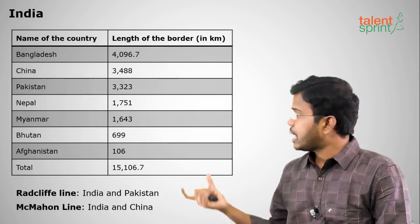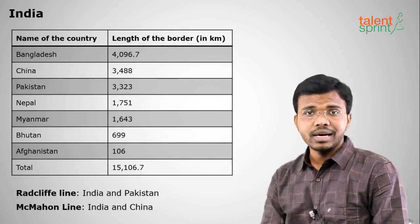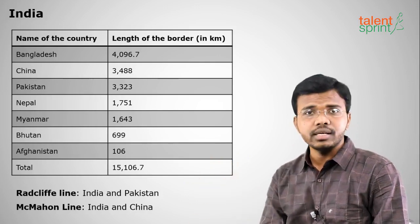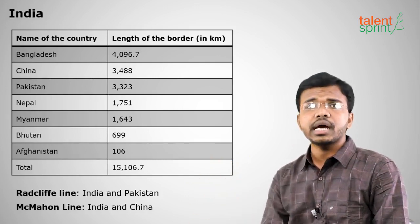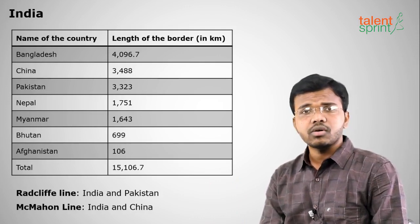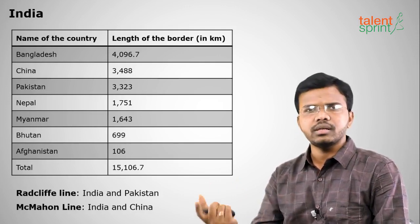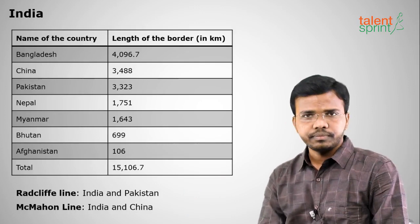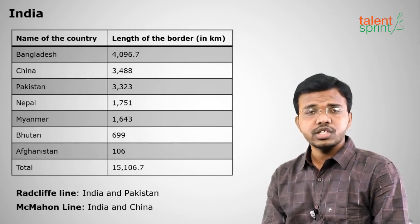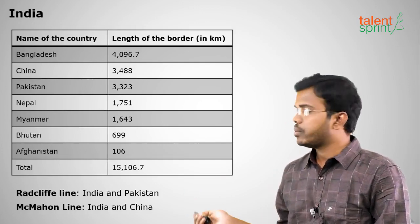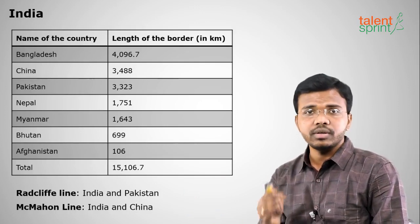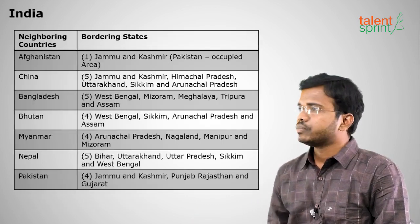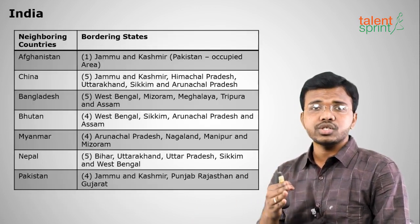The line between India and Pakistan is called the Radcliffe Line — a very frequently asked question. It was drawn by the British person Cyril Radcliffe. The McMahon Line is between India and China. Remember: Radcliffe Line = India-Pakistan; McMahon Line = India-China.